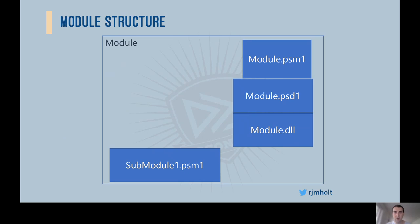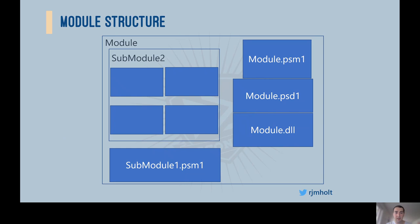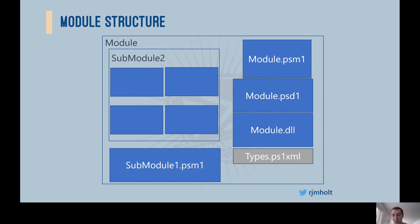Because PowerShell modules are composable things, it can get much more complicated. You might add a binary component or a sub-module — a module only to this parent module. Sub-modules don't have to be individual module files; they could be whole directories with another manifest and another script module or DLL module within. Not everything within a PowerShell module has to be PowerShell code or executable. You can include PS1XML files like types or formats PS1XML, which adds type annotations or formatting system entries to PowerShell types in the current session, or even scripts that execute when the module is imported.